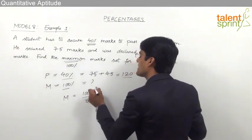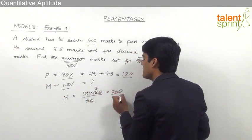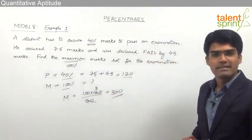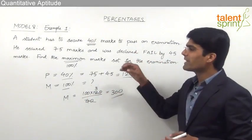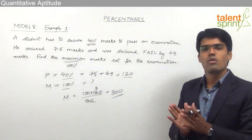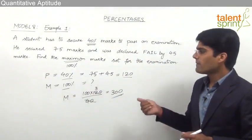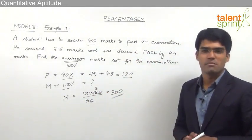Since 40 goes 3 times into 120, the maximum marks will be equal to 3 × 100 = 300. This is how we solve these types of questions by finding out the passing marks, from which we can get the required maximum marks.